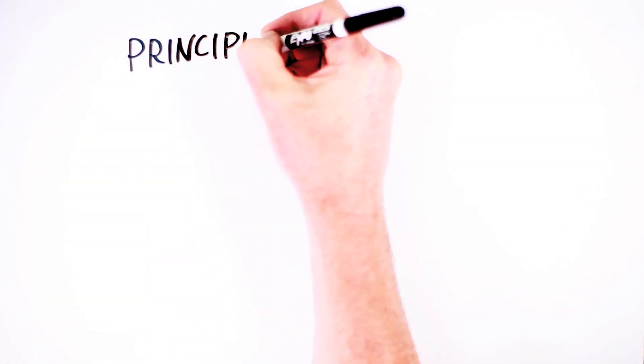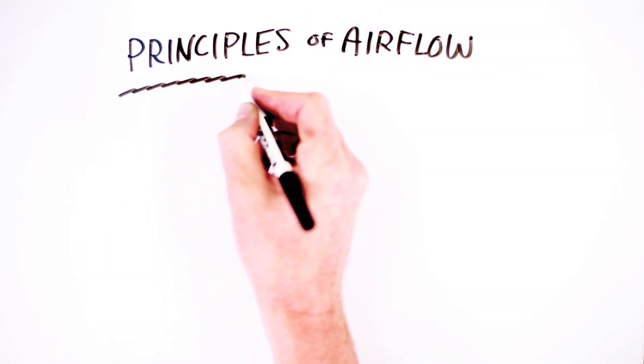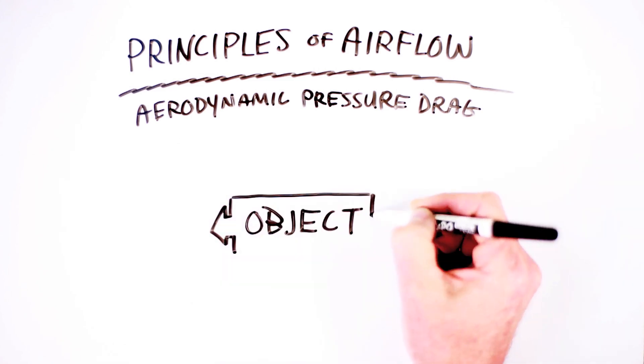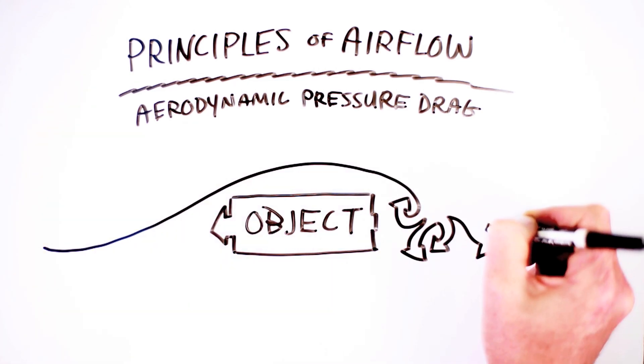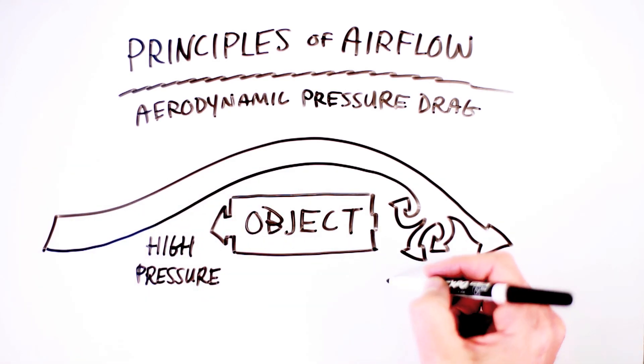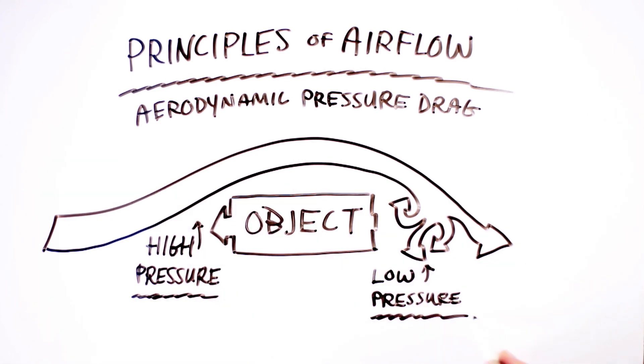To understand the science behind our new Aero 55, it helps to think about some basic principles of airflow, like aerodynamic pressure drag. As an object moves forward, its leading edge encounters high air pressure and forces air to flow around it. Behind the object sits a low-pressure void. With high pressure in front and low pressure behind, the moving object has to overcome this air pressure differential. Although slight, pressure drag is literally pulling the object backward.